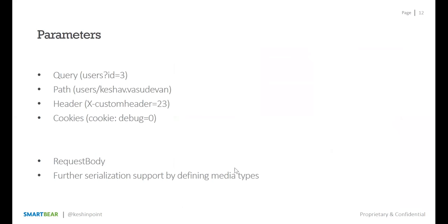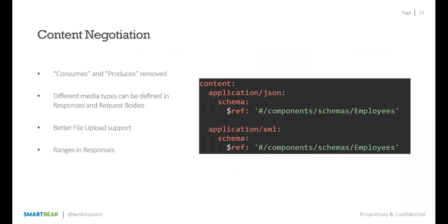On parameters: a new feature is cookie parameters, so you can now send cookie requests in your API call parameters. The 'body' parameter from Swagger 2.0 has been removed and replaced with 'requestBody', which is easier to write and brings better descriptive capabilities. There's also further serialization support.